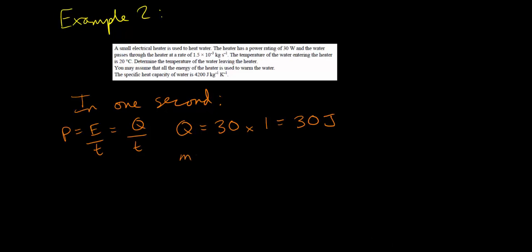We also know that the mass flow rate is 1.5 times 10 to the minus 3 kilograms per second, which means in one second that will simply be 1.5 times 10 to the minus 3 kilograms. They also give us the temperature of the water coming into the heater as 20 degrees C. We will need to find the temperature that it leaves at. So we need to find delta T. What is the change in the temperature of the water?